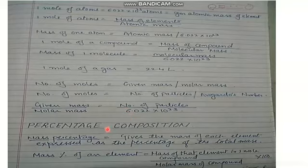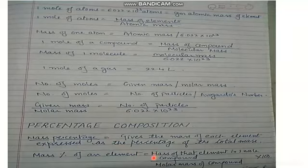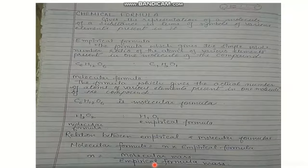We also have percentage composition. The mass percentage of any element in a compound can be found as: mass of that element in 1 mole of the compound / molar mass of the compound × 100. This gives the mass of each element expressed as a percentage of the total mass.